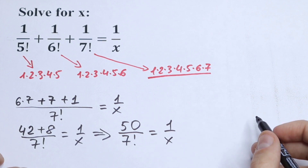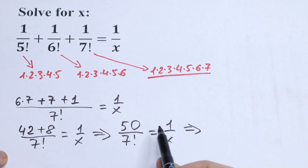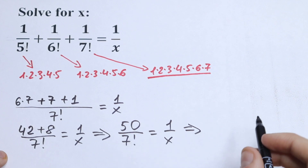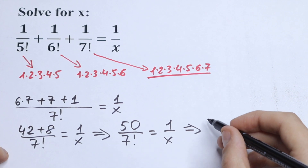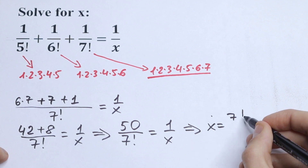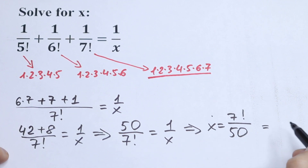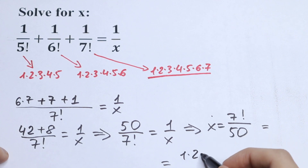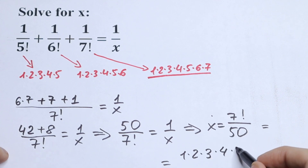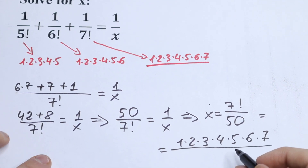So how can we solve this? Using cross-multiplying, we will have that x equals 7 factorial in the numerator divided by 50. So x equals 7 factorial divided by 50.